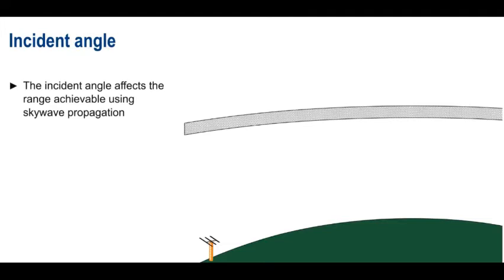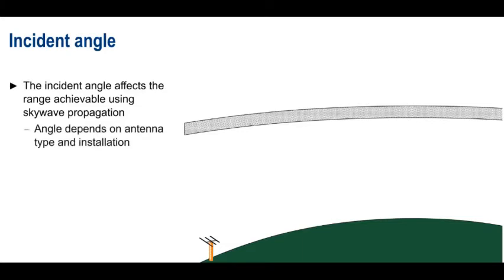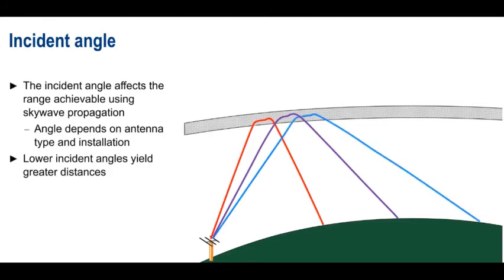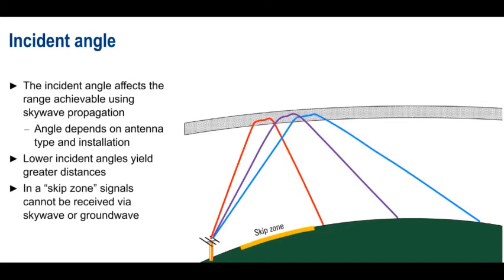The incident angle, or the angle at which a signal reaches the ionosphere, also plays an important role in how far a skywave signal will propagate. The radiation angle of an antenna is primarily a function of both the type of antenna, and the location at which the antenna is installed. Higher placement of an antenna usually lowers the radiation and incident angles. And generally speaking, the lower the incident angle, the greater the distance covered by skywave propagation. Note however that so-called skip zones may be created, depending on the radiation or incident angle. In these zones, HF signals can't be reached either via skywave or via ground wave propagation.